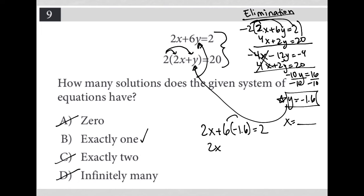2x + 6(-1.6) = 2. Whatever that number is, I can add it to both sides, so 2x equals some number. Divide both sides by 2, and I get an x value.